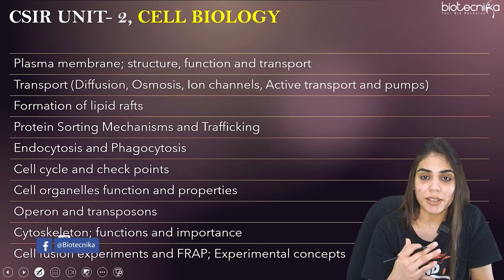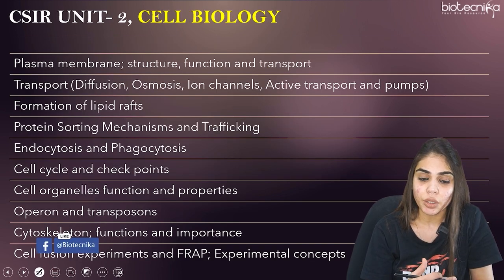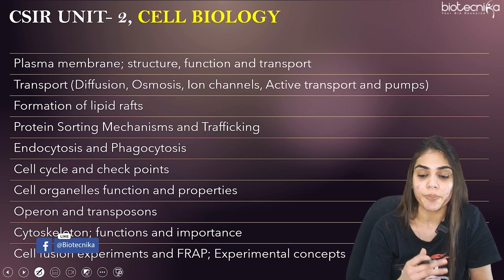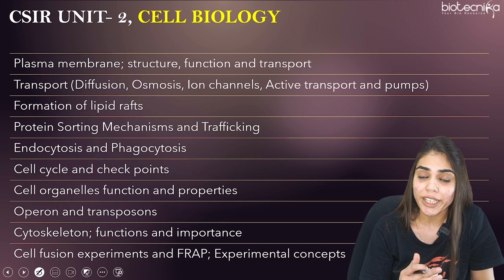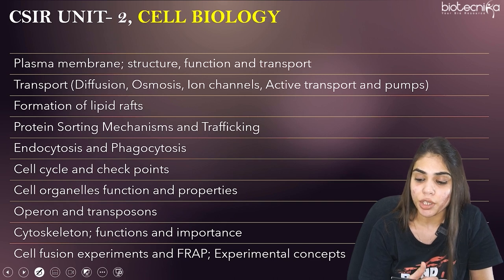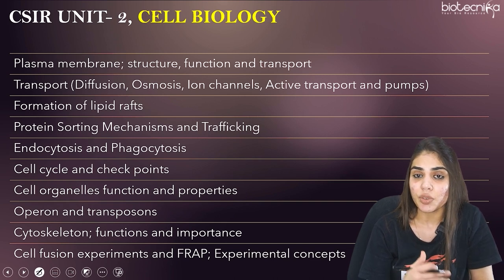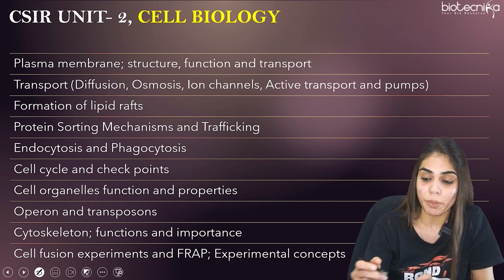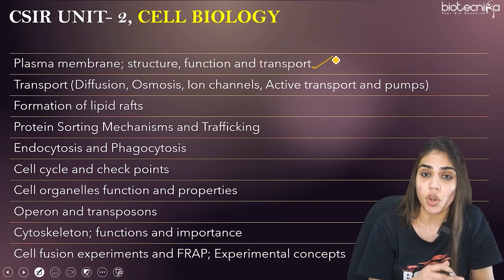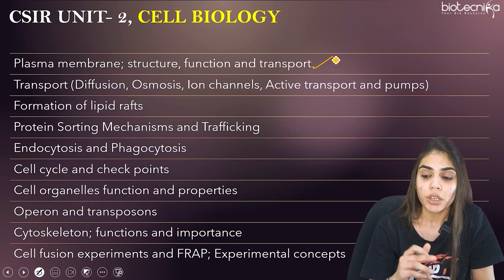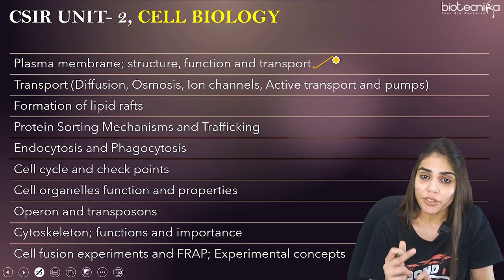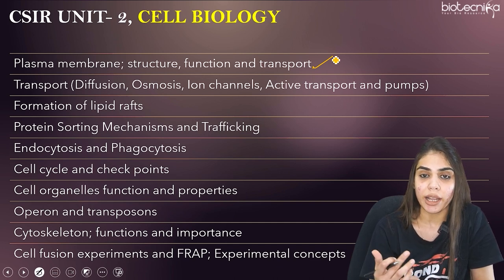Coming to Unit 2, which is Cell Biology. You have to prepare about the plasma membrane — its structure, function, as well as the transport happening across it. Make sure you are covering this topic in detail. Under transport, cover diffusion, osmosis, facilitated diffusion, water and ion channels, since plasma membrane and transport are essentially the same topic.